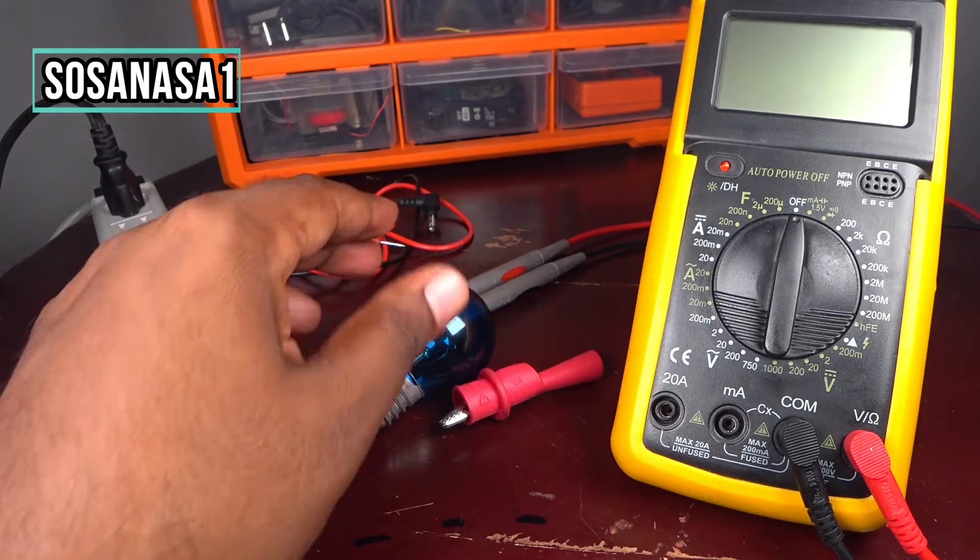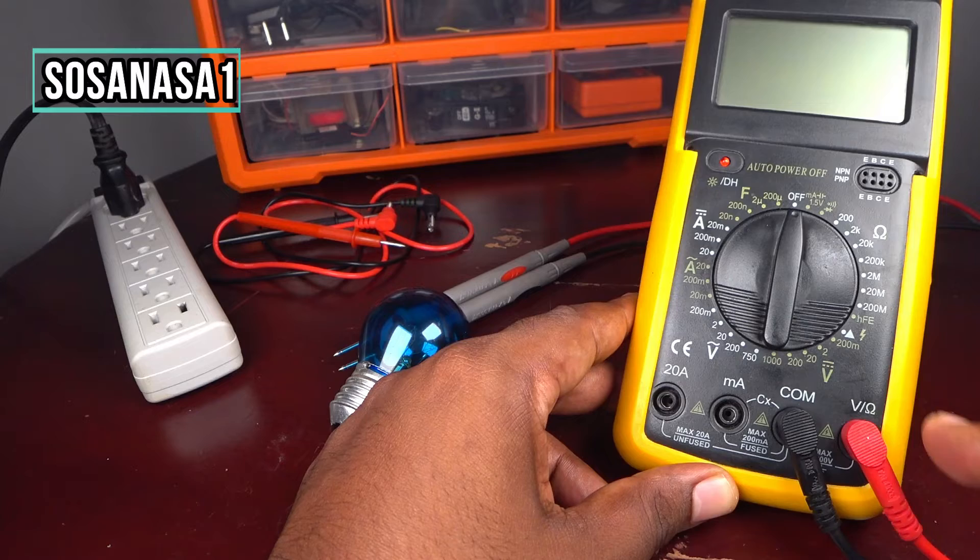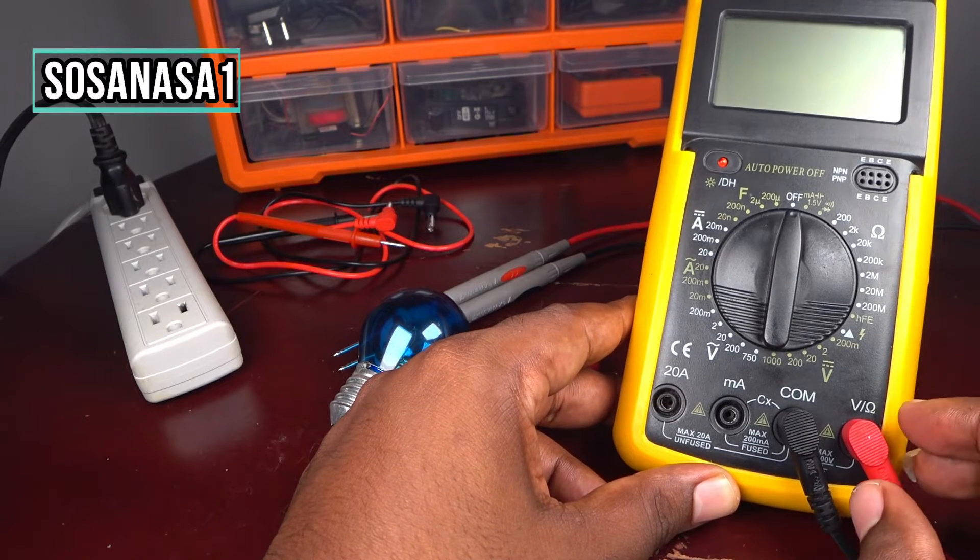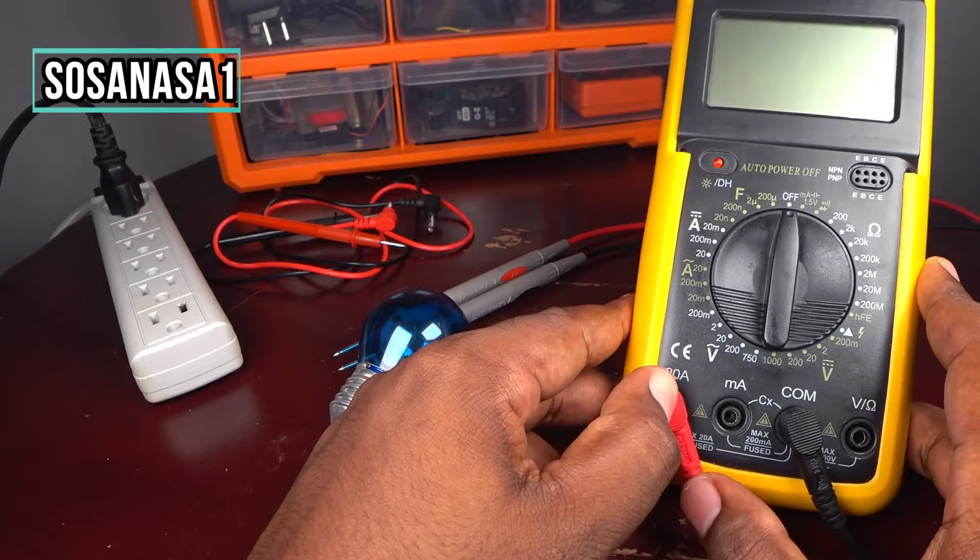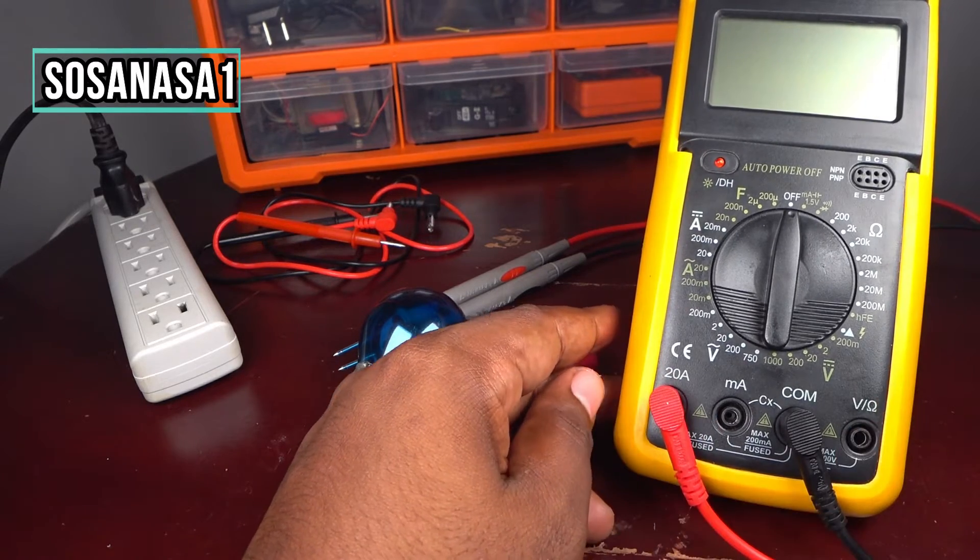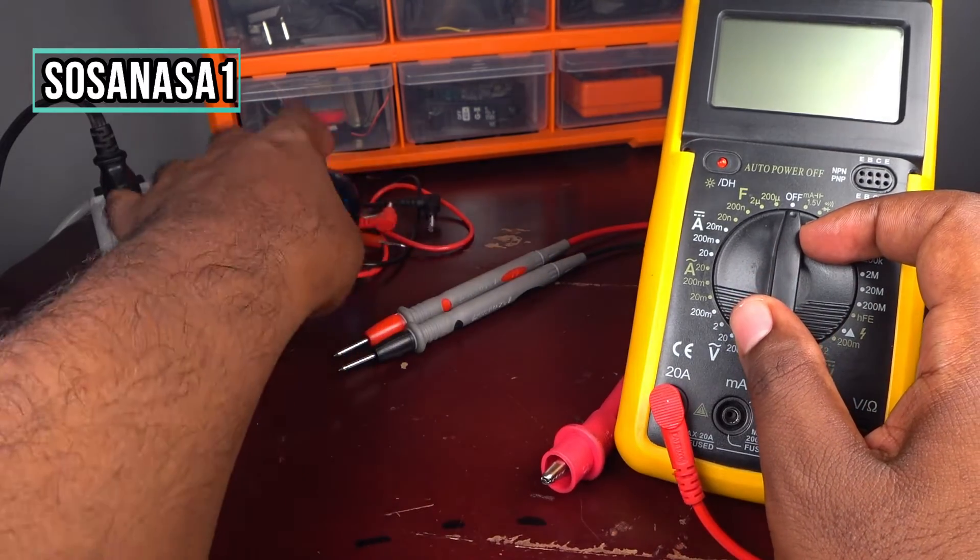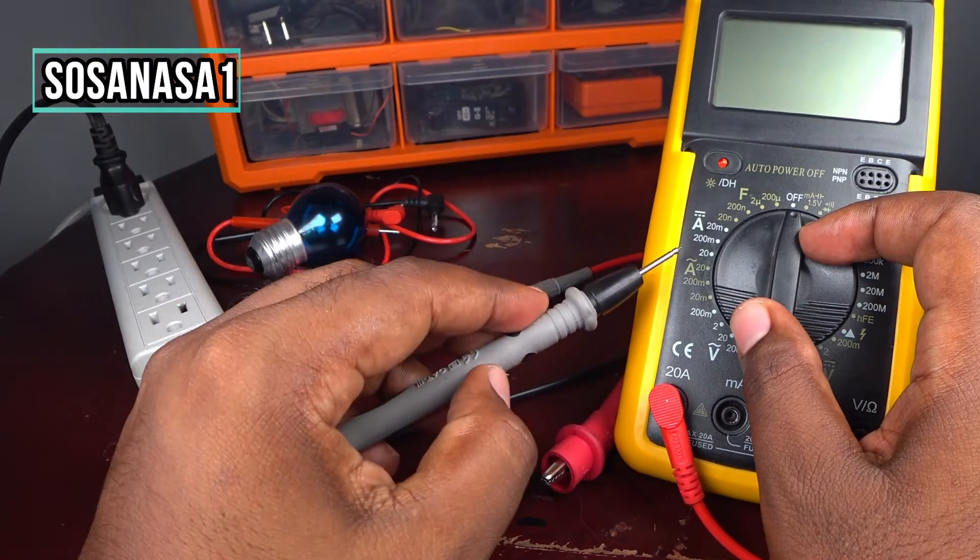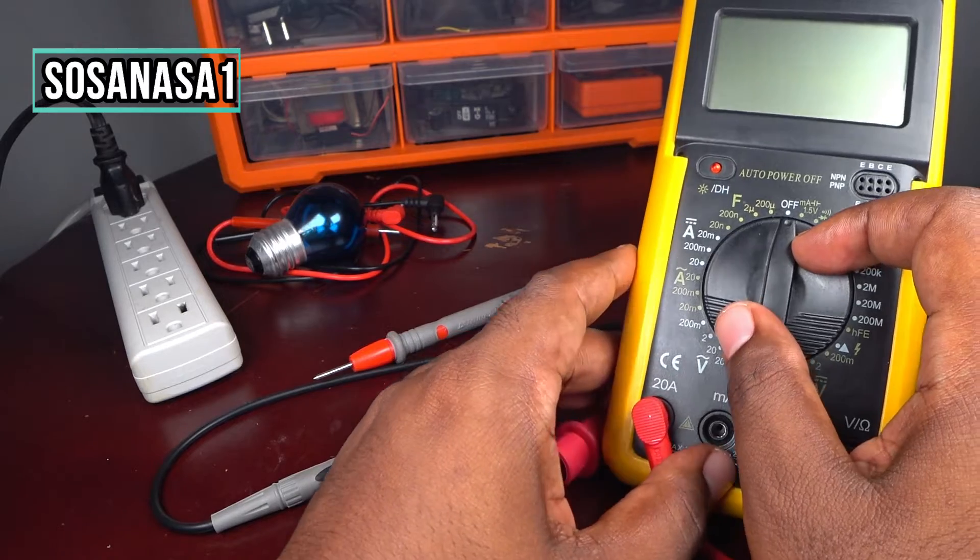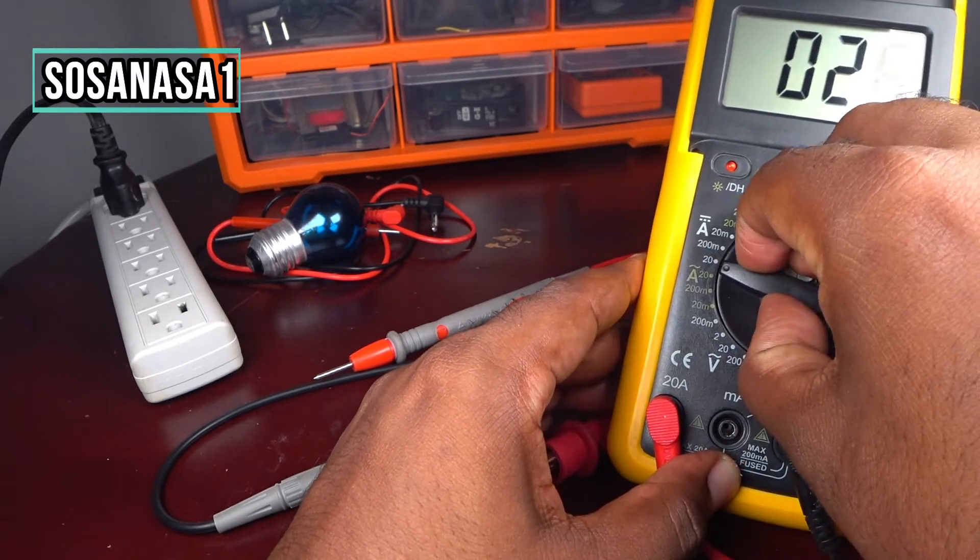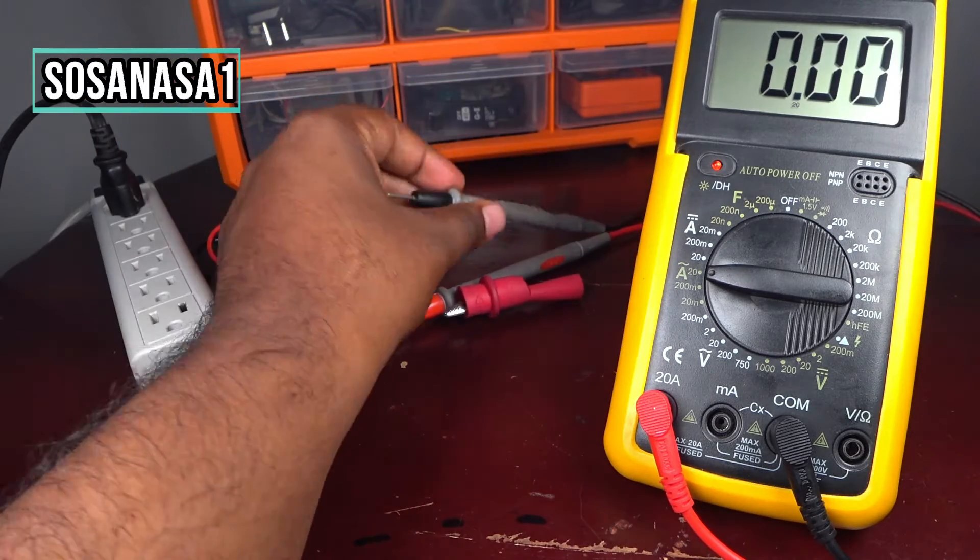First step, let's set up this digital multimeter. Connect this here and connect here in 20 amps. In this case, choose 20 amps at this point. Ready. Now our digital multimeter is ready.